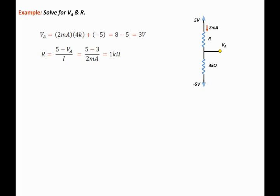So in this circuit we were able to apply Ohm's law on the bottom resistor. We stated that the voltage at the top of the resistor equals the voltage drop plus the bottom voltage. Once we did that, we solved for the voltage across the top resistor and then found the value of the top resistor R.